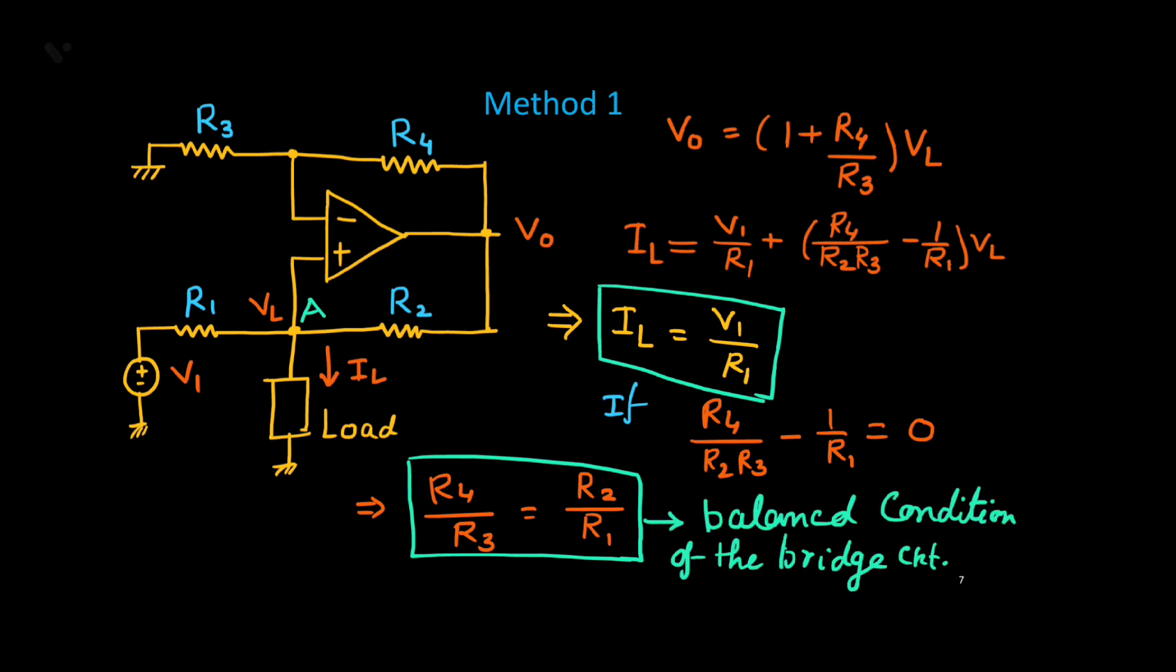You see this condition is very similar to Houston Bridge and is called the balanced condition of the bridge circuit. Similar to Houston Bridge concept, under balanced condition you will find a constant current IL through the load, and that current value will simply be this voltage V1 upon this resistance R1. This is method 1 and we will consider second method in the next class.